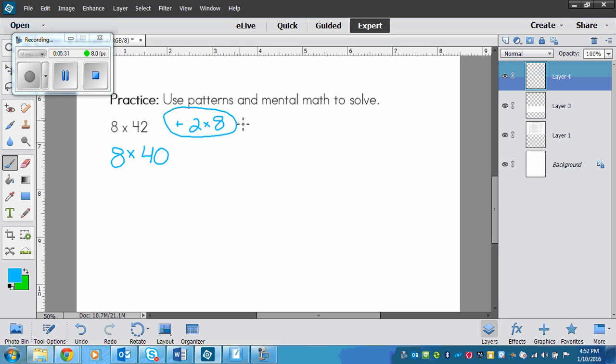Now I can do 2 times 8 because that equals 16. So whatever my answer is here, I'm going to have to add 16 to it to get my real answer, right? Because this is like saying 42 groups of 8. We're going to find 40 groups of 8 first, and then add on 2 more groups of 8, which is 16.